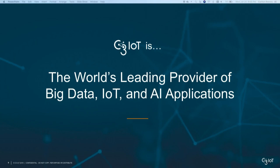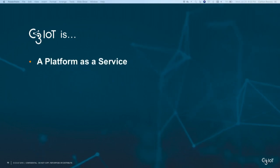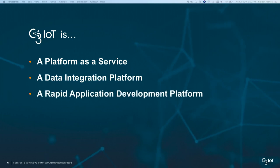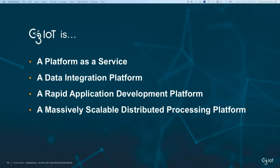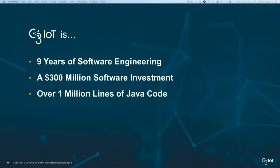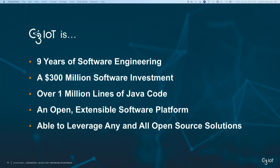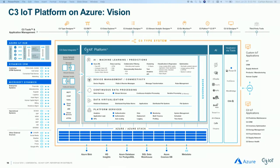C3 IoT is trying to become — and we believe we currently are — a world leader and provider of big data, AI, and IoT applications. We're a platform as a service that allows data integration and lets you develop and operate applications on a massively scalable processing platform. We've been around for about nine years, have significant customers, and like to say we're a low-risk, tried, tested, and proven platform — with about a million lines of Java code in our proprietary platform that is open, extensible, and can leverage any open source solutions.